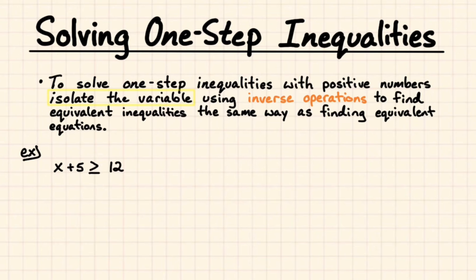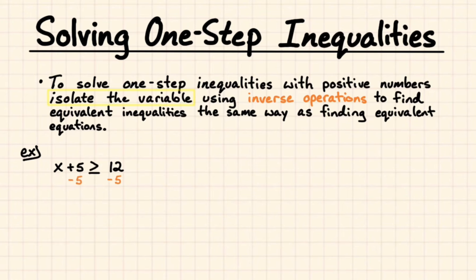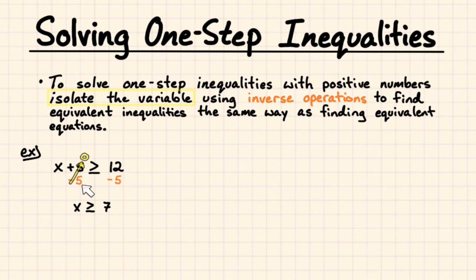Our first example is going to be x plus 5 is greater than or equal to 12. So we're talking about all the values for x that make x plus 5 greater than or equal to 12 true. Using inverse operations the same way as finding equivalent equations, we'll subtract 5 from both sides to get x by itself — that's isolating the variable. 5 minus 5 goes to 0; we have to do it to both sides to maintain an equivalent inequality, meaning the same value set for x that makes this true will also make this true. And this is much more simple to look at.